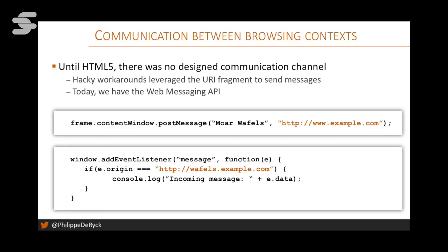The iframe doesn't receive the message by default — it needs to register an event listener. When it receives a message, the first thing it should do is check where the message came from, because anybody can send messages: the host page, a sibling iframe, or just about anywhere — browser extensions do this too. If the message comes from the expected context, process it; if not, discard it. This is where the origin concept comes back again. The event also contains a reference to the frame that sent it, so you can use 'e.source' to send a reply.